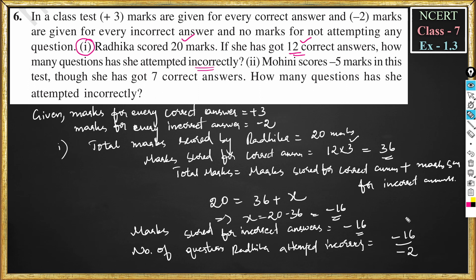Number of questions Radhika attempted incorrectly = −16 ÷ (−2), because −16 is the total score for incorrect answers and −2 is the score for each incorrect answer. This equals 8. So Radhika attempted 8 questions incorrectly.